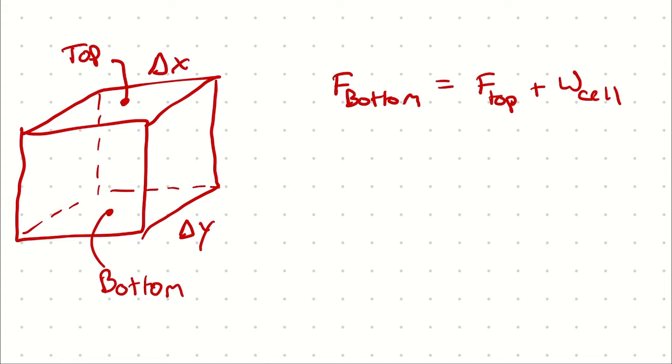For example, if I had a column of textbooks sitting on a desk—the bottom textbook weighing 5 pounds, the middle textbook 3 pounds, and the top textbook 1 pound—then the force exerted by the bottom textbook onto the desk would be 9 pounds, because it's the weight of that textbook plus the weight applied on top of it.